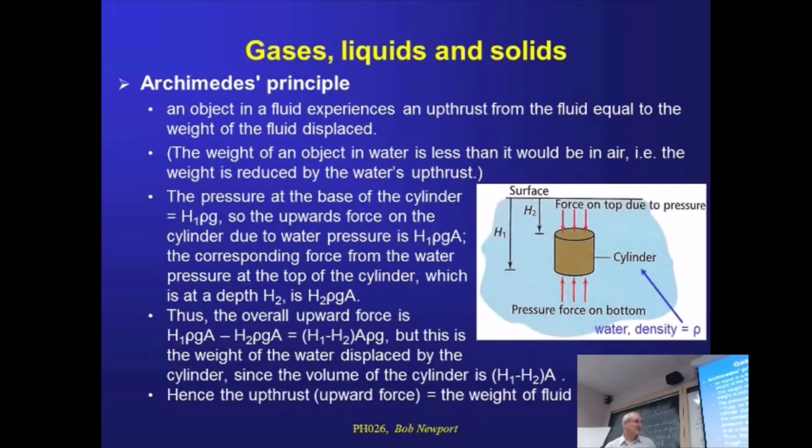But, remember the volume of the cylinder is just h1 minus h2, multiplied by the area. It's the height of the cylinder, multiplied by its area. So this first bit is volume. And here we've got volume times density. Volume times density is just mass. So we've actually got the mass of the equivalent amount of water to that volume, multiplied by g. Hence the opening statement. The net up thrust on this cylinder is the weight, mg, of the water, whatever fluid it is that's being displaced. So this is Archimedes' principle.